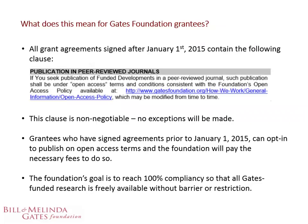What does this mean for grantees? The open access clause is contained within a publications and peer-reviewed journal clause that's in all grant agreements from January 1st, 2015 onwards. We invite anybody with grants before then to opt into the policy and we'll cover those publishing fees. It is a requirement for all grants post January 1st, 2015 — it's non-negotiable and no exceptions will be made. Our executive leadership team has held quite firm on this. Our goal is to continue to reach 100% compliance to ensure that our research is openly available to all.